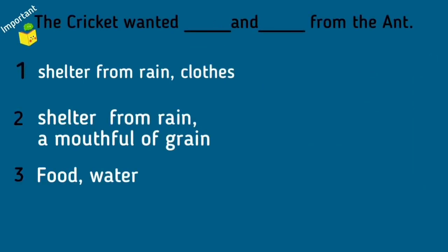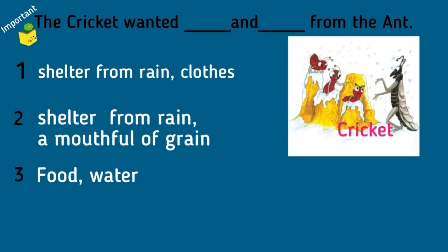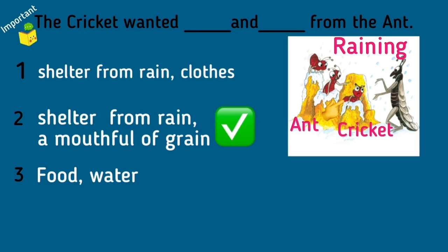For a change, we have a fill-in-the-blanks question: The cricket wanted dash and dash from the ant. Option one: shelter from rain and clothes. Option two: shelter from rain and a mouthful of grain. Option three: food and water. As you can see in the picture, the cricket is standing in the right corner and the ants are in front of it — it is also raining. In the midst of the rain, the cricket asks the ant for shelter from rain and food. Option two is correct: shelter from rain and a mouthful of grain, where mouthful of grain refers to food.